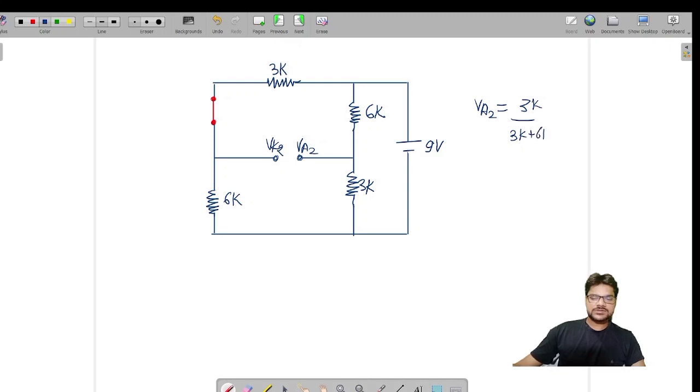9V is connected here, this is again in series. So I can find out VA2 using voltage division: 3K by 3K plus 6K into 9. So this 9 and 9 will get cancelled out, we will again get 3 volts. VA2 I got 3V.